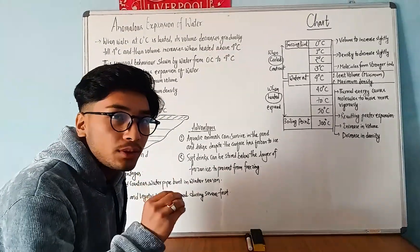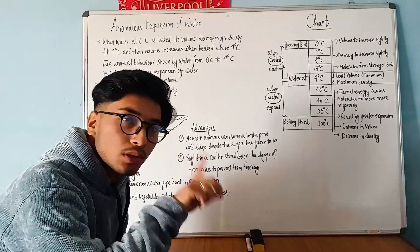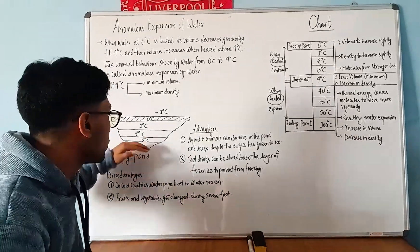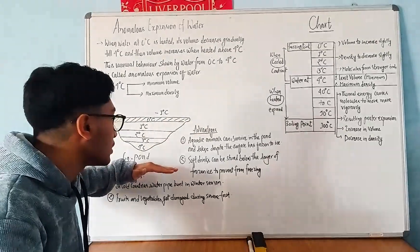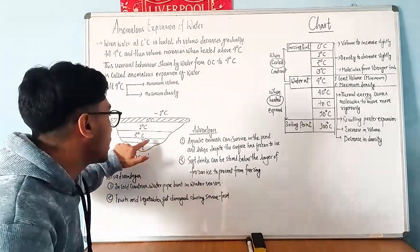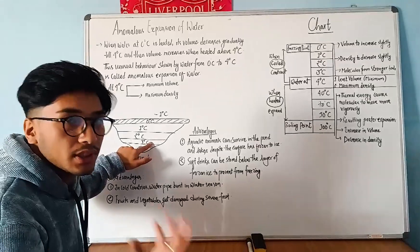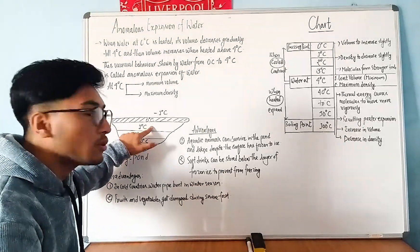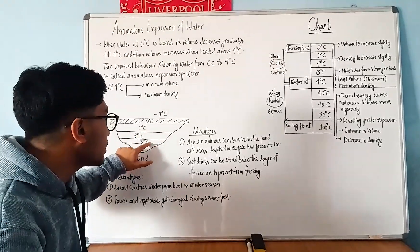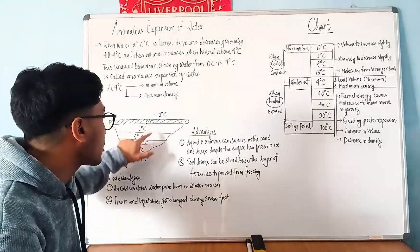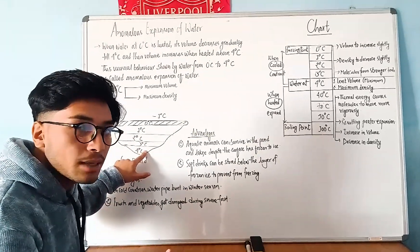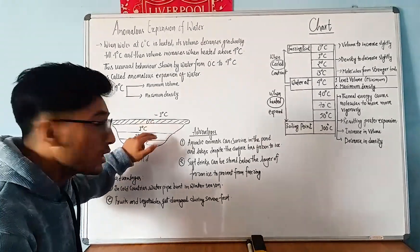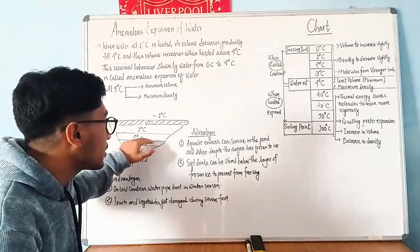When the density of water is maximum at 4 degrees Celsius, in cold countries the water at the surface is 4 degrees Celsius, and below it the water is at 3 degrees Celsius. The density of the water is maximum at 4 degrees Celsius.